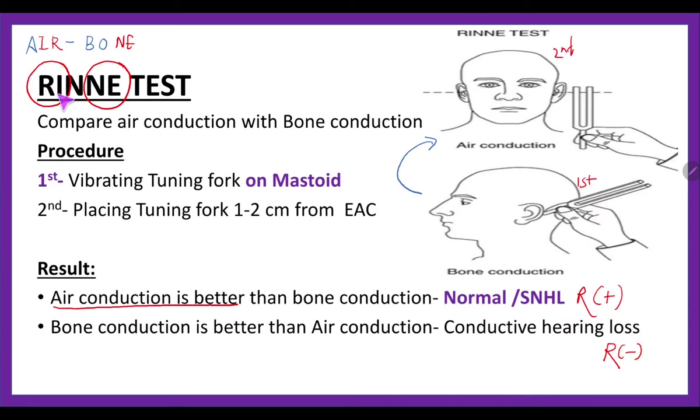Next, coming to the test procedure: Rinne test. We have Rinne, that is air and bone. It is comparing the air conduction with bone conduction. We can also infer the air-bone gap. How is the procedure? Take the tuning fork, activate it, first place on the mastoid, and the moment the person cannot feel the vibration, take it towards the external auditory canal, align it parallel to it at least one to two centimeters away. If the person is hearing, then the test is positive. If not hearing the vibration, then it is Rinne negative.